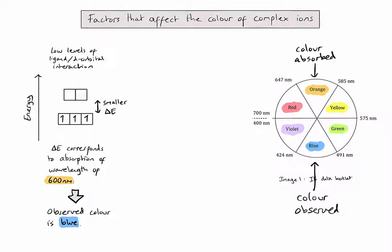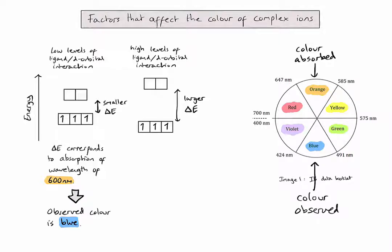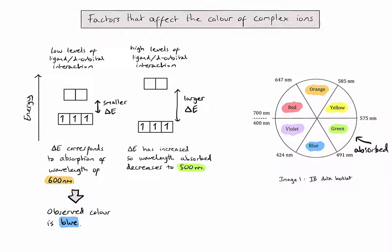Now let's see what happens when we change the amount of interaction between the ligand and the D orbitals. With high levels of ligand to D orbital interaction, we have a much larger gap in energy between the split D sub-level. This means that an electron transitioning up to one of the higher D orbitals would need to absorb light of a higher energy or a shorter wavelength. So let's imagine it absorbed light with a wavelength of 500 nanometres, which is found in the green part of the visible spectrum. Looking at the opposite side of the colour wheel to green gives us red. So in this comparative example, we can see how the amount of interaction between a ligand and the D orbitals can change the splitting, and therefore will change the amount of energy absorbed for an electron transition, which in turn will affect the colour observed in the solution.